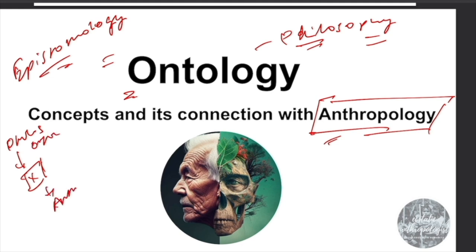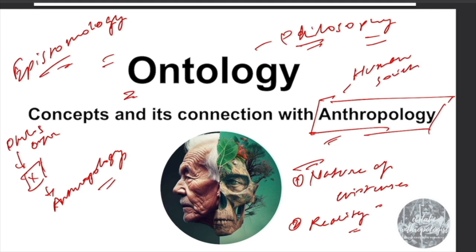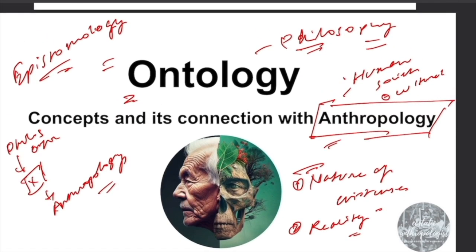We can see that ontology and anthropology are two distinct disciplines that share a common interest. Ontology is concerned with the nature of existence, society, and reality. Whereas anthropology is concerned with human society, cultures, and different cultural models.